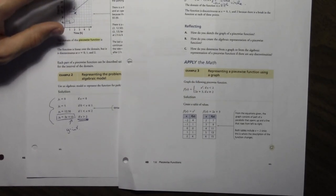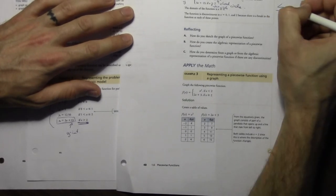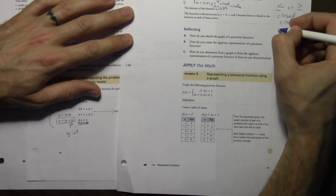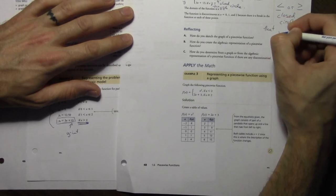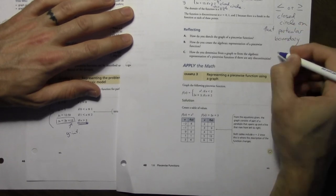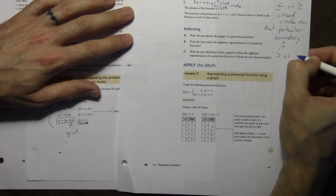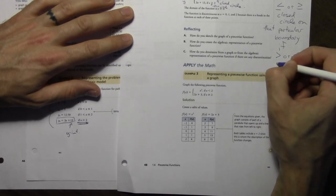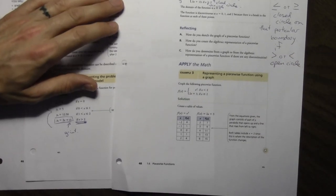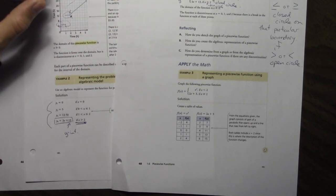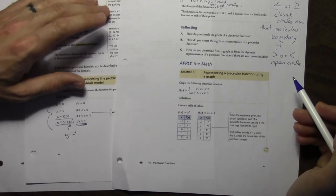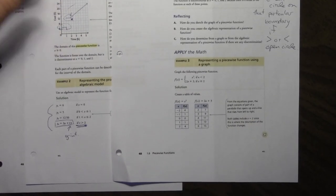Can you just do that part about closing open circle again? Sure. If you have a symbol like this or like this, closed circle on that particular boundary. If this or this, it's an open circle. Right? Because this is not including that point. That's why it's open. It's closed. You're saying this point as well. Next one, graph the following piecewise function.